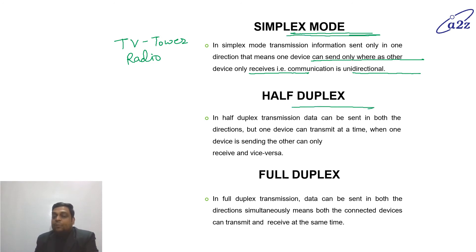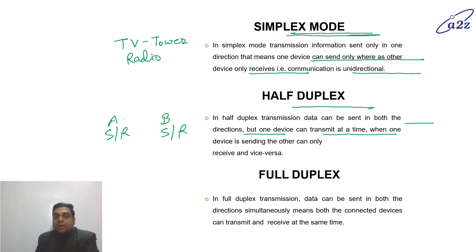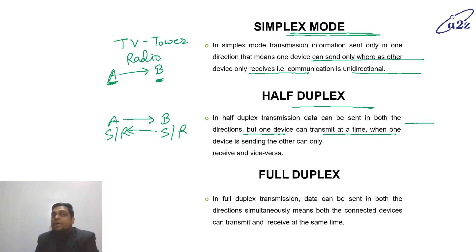In half duplex mode, both devices can transmit, but only one at a time. There is device A and device B — A can be sender or receiver, and B can also be sender or receiver, but only one at a time. If A is sending then B is receiving, and if B is sending then A will receive. Both devices can send and receive, but only one at a time. In contrast, in simplex mode, A will always send and B will always receive — B is never able to send.